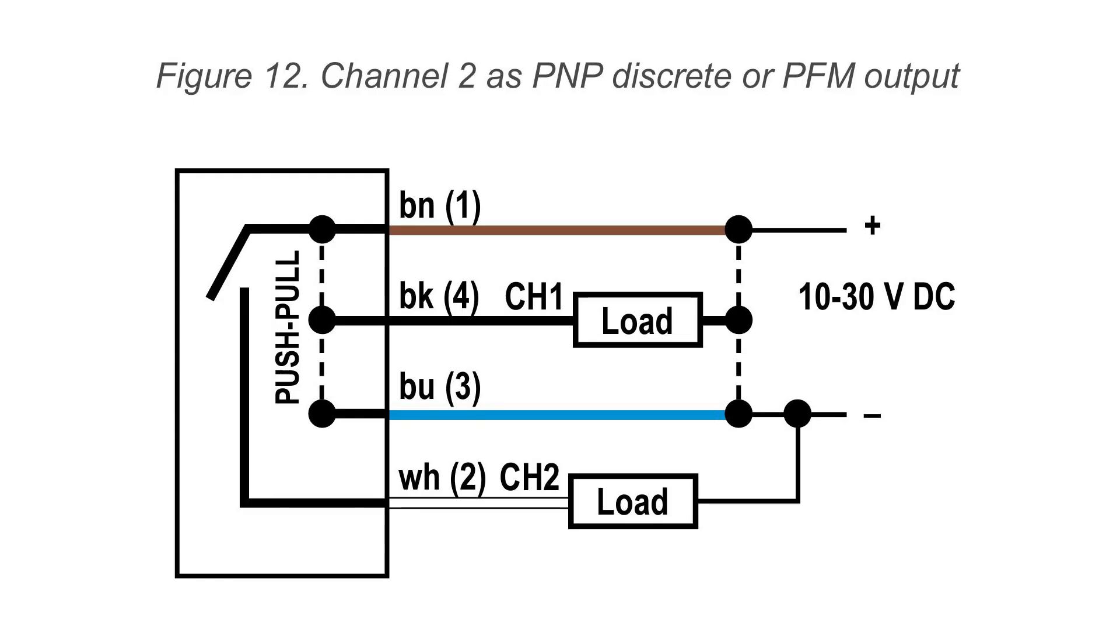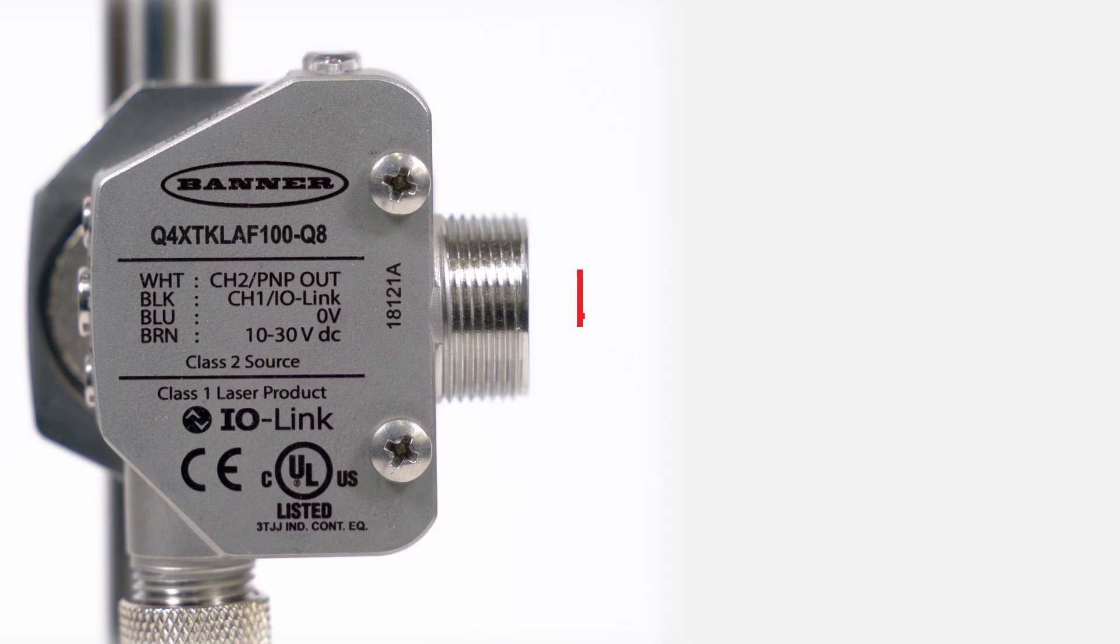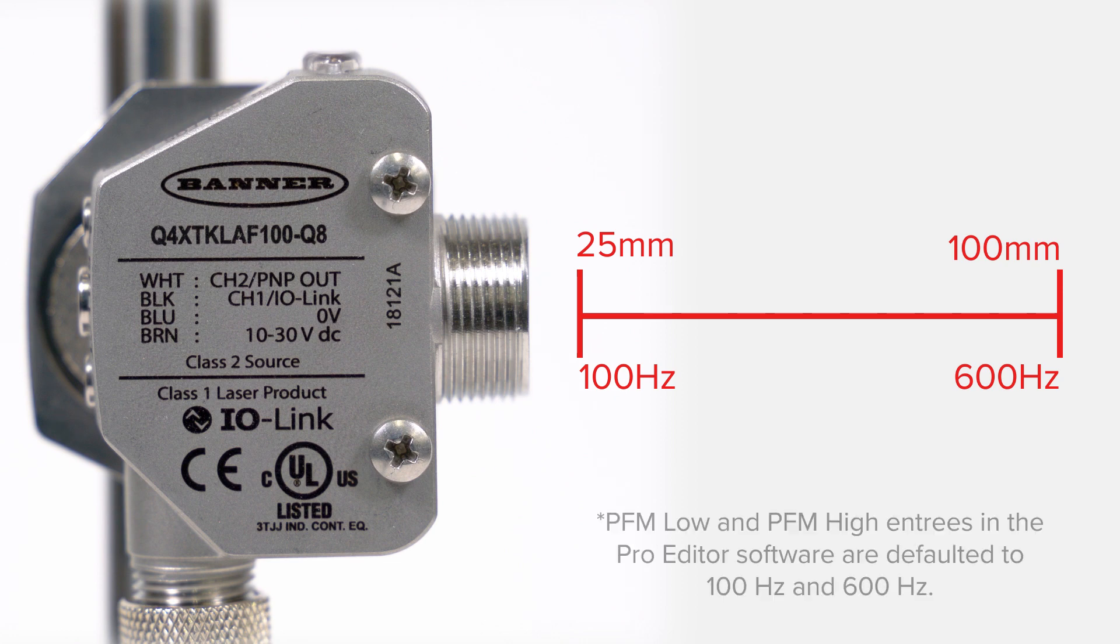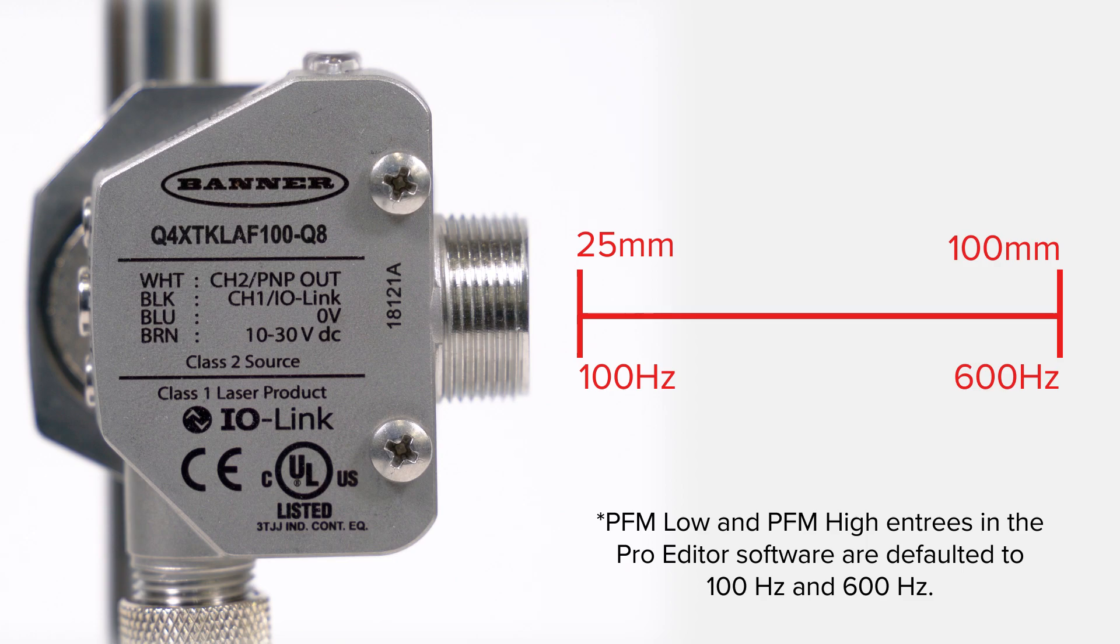The Q4X is now configured to provide a 100 to 600 Hertz PFM output via pin 2 or the white wire with 100 Hertz reflecting the nearest measurement and 600 Hertz reflecting the farthest measurement as defined by the Q4X model's range.